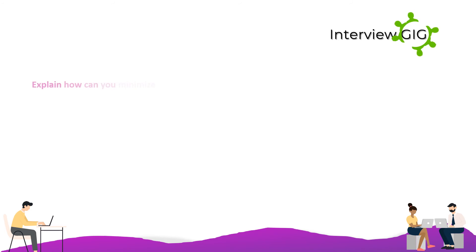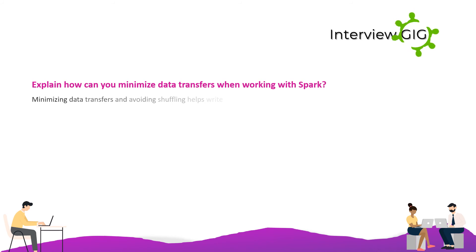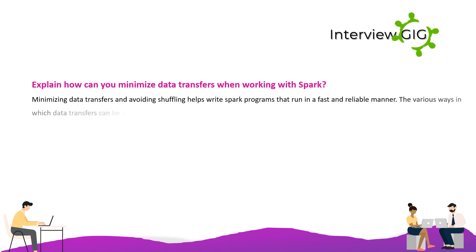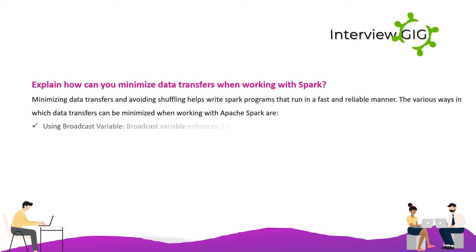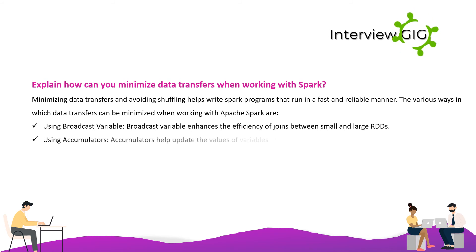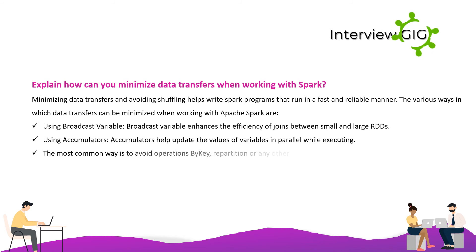Explain how you can minimize data transfers when working with Spark. Minimizing data transfers and avoiding shuffling helps write Spark programs that run in a fast and reliable manner. Ways to minimize data transfers include: using broadcast variables, which enhance the efficiency of joins between small and large RDDs; using accumulators to help update variable values in parallel; and avoiding operations that trigger shuffles such as repetitive operations by key.